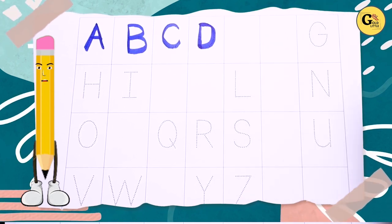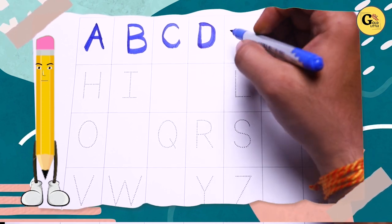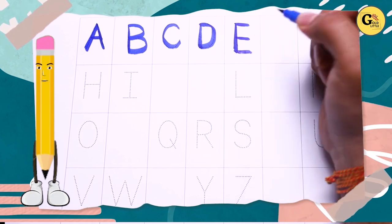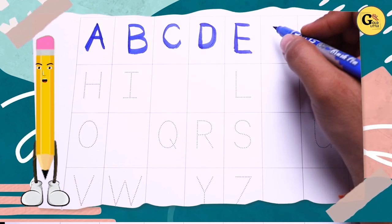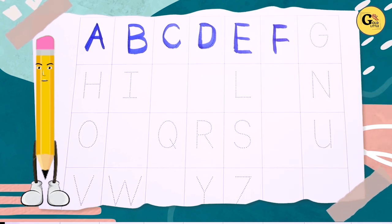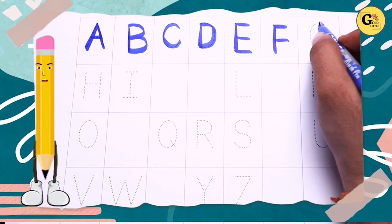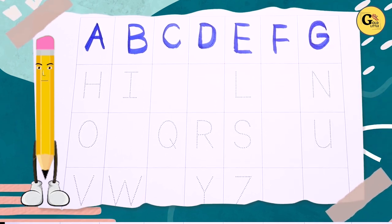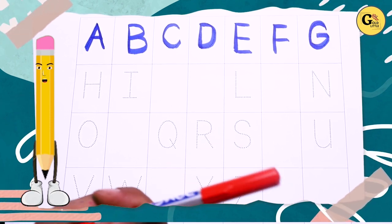Oh, what is next? Tell me E. Next is E. And what is next? F. Next is G. Blue color G. Now we change the color.